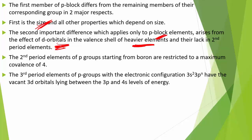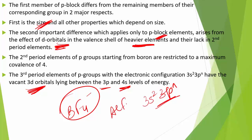For example, boron forms only BF₄⁻, but aluminium can form AlF₆³⁻ — covalence goes from 4 up to 6. The presence of d-orbitals influences the chemistry of heavier elements considerably. The combined effect of size and availability of d-orbitals influences the ability of these elements to form pi bonds.